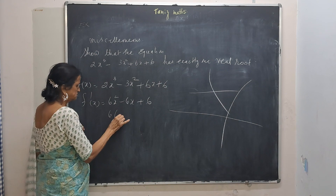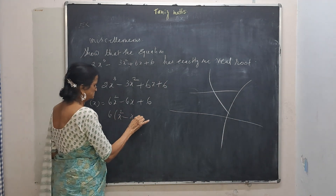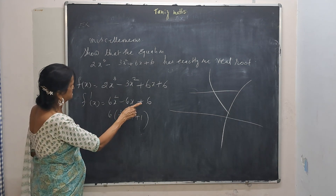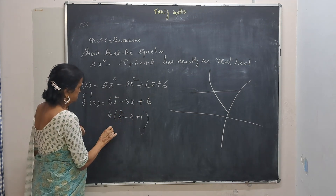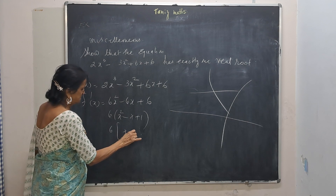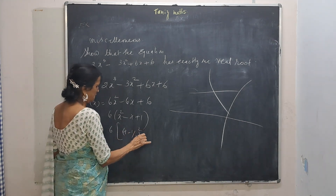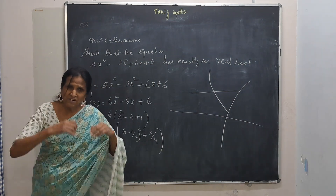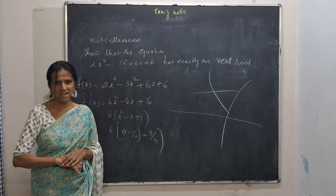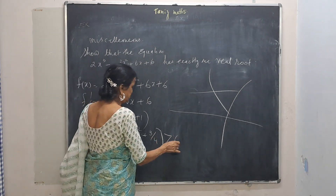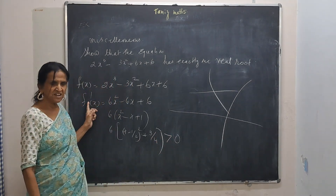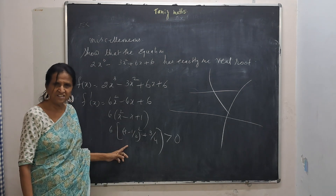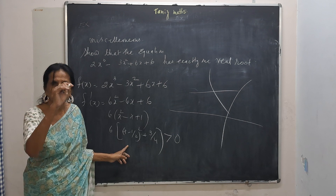Take 6 outside. We get x squared minus x plus 1, which equals 6 times (x minus one-half) squared plus three-quarters. This is always, always positive — always greater than 0.